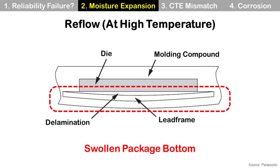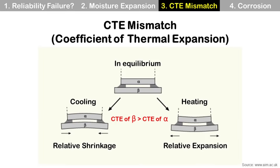The package is also swollen. This is a simple illustration of how CTE mismatch works. Imagine there are two materials connected to each other, and the CTE of the bottom material is bigger than the top material. During heating, these materials will expand together, but the bottom material will expand more than the top because its CTE is bigger. With this reason, the interface gets stressed and experiences failure.